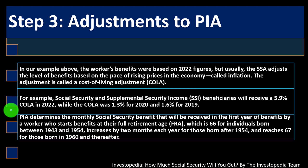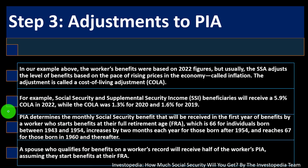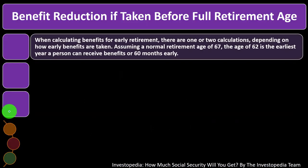PIA determines the monthly Social Security benefits that will be received in the first year of benefits by a worker who starts benefits at their full retirement age — FRA — which is 66 for individuals born between 1943 and 1954, increases by two months each year for those born after 1954, and reaches 67 for those born in 1960 and thereafter. A spouse who qualifies for benefits on a worker's record will receive half of the worker's PIA, assuming they start benefits at their FRA.